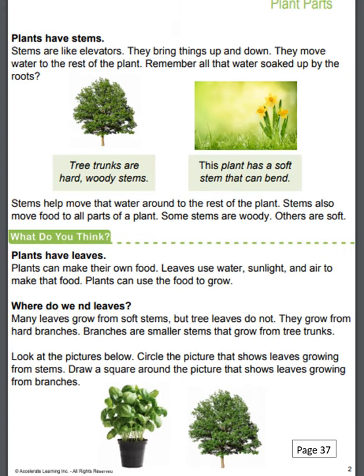Plants have stems. Stems are like elevators — they bring things up and down. They move water to the rest of the plant. Remember all that water soaked up by the roots. Tree trunks are hard woody stems. The next picture is of a yellow daffodil — this plant has a soft stem that can bend. Stems help move water around to the rest of the plant. Stems also move food to all parts of a plant. Some stems are woody, others are soft.